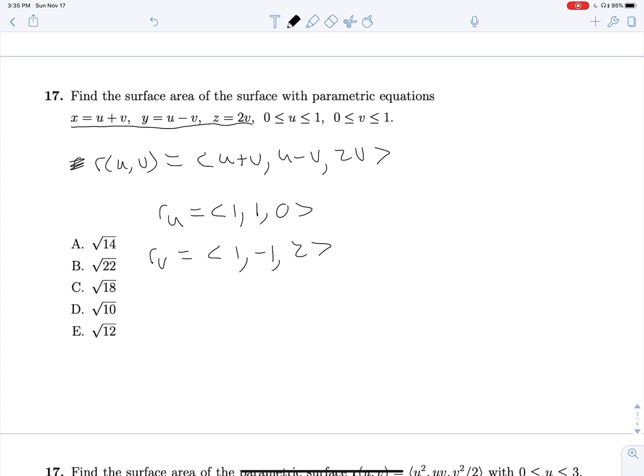So we can take this cross product now. We are going to get 2, negative 2, 2. And so we need the magnitude of this, which is going to be root 4 plus 4 plus 4, which is root 12.